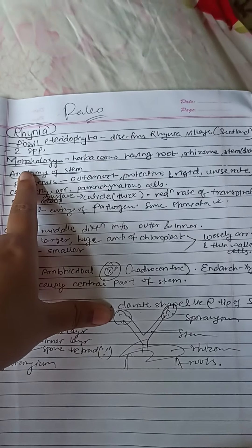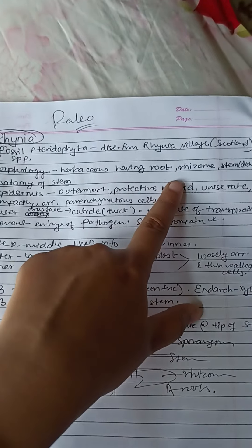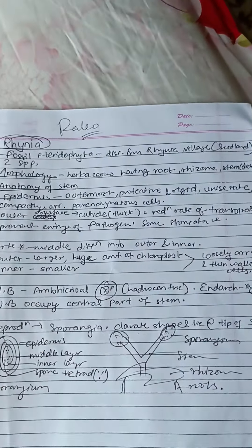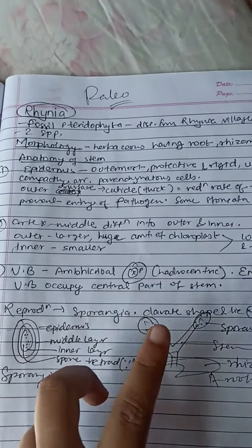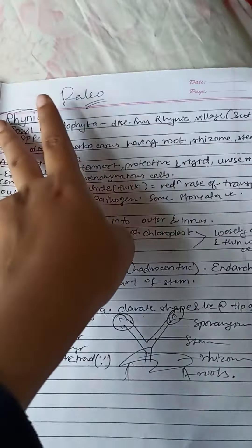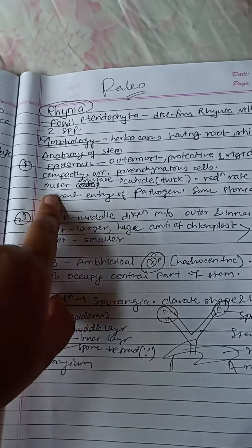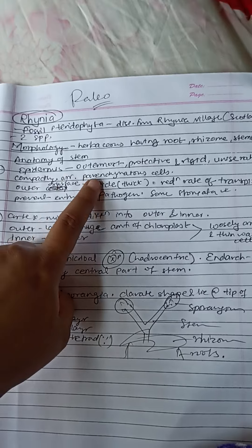There is a root, a rhizome, and stem is dichotomously branched. This is also dichotomously branched. And anatomy of stem is similar.